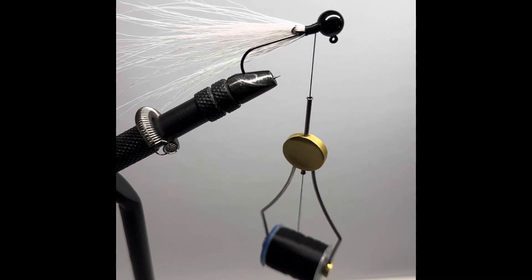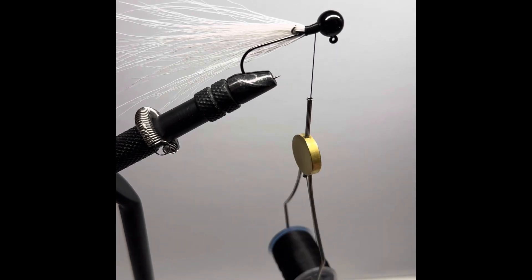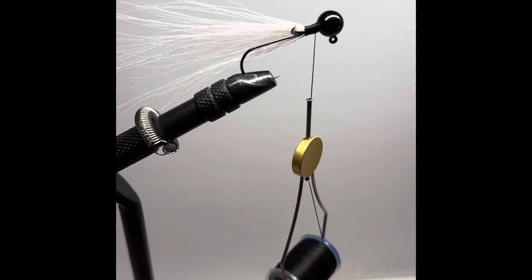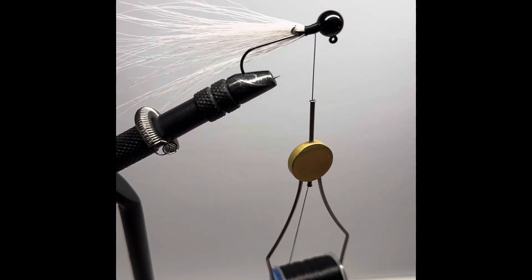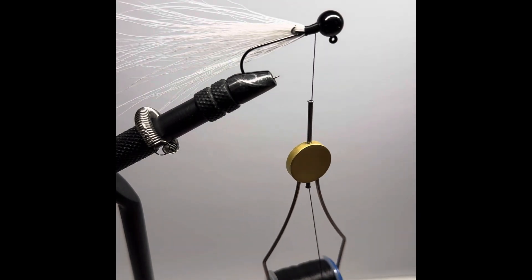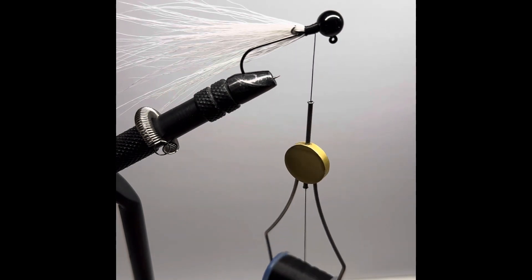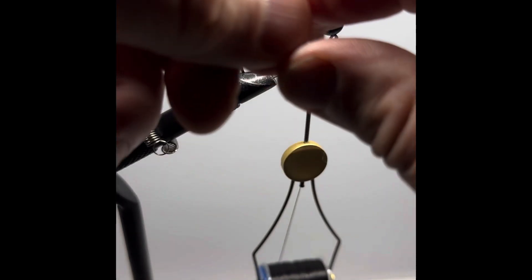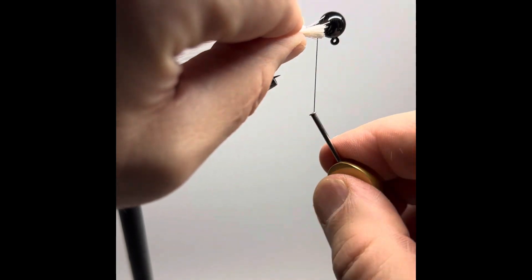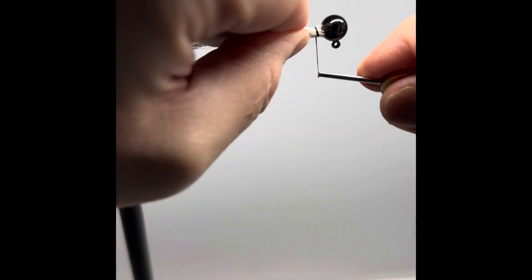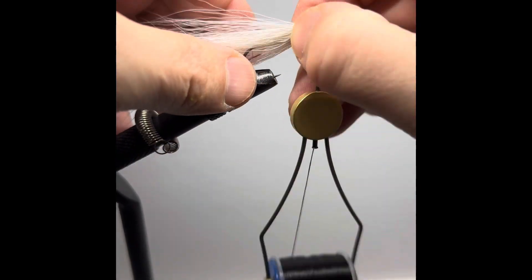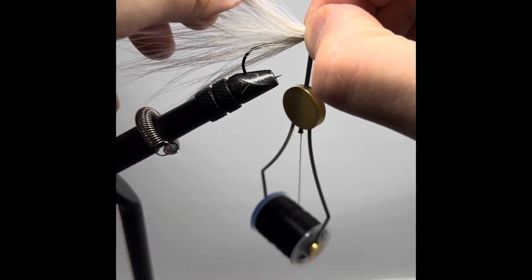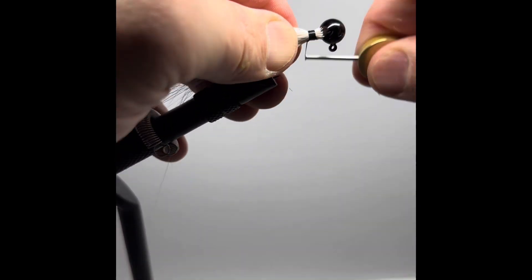Cutting off a piece of another bucktail and getting rid of those guard hairs. And we're going to tie that right in on the other side. Loosely we're wrapping it in, moving it and manipulating it where we want it and then locking it down.